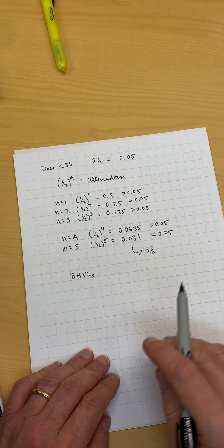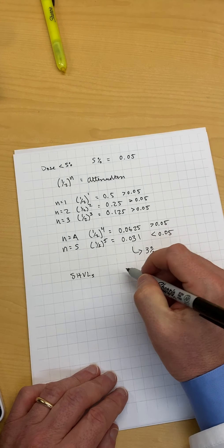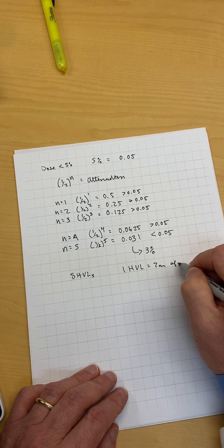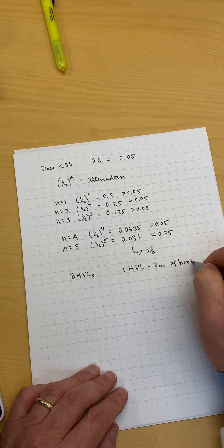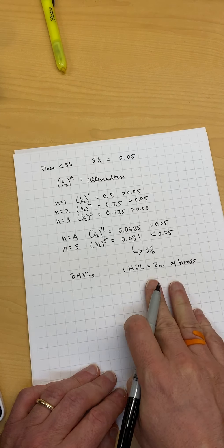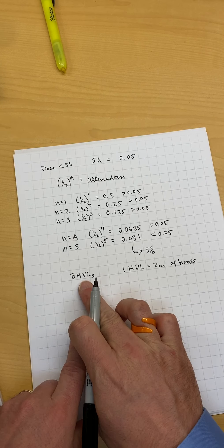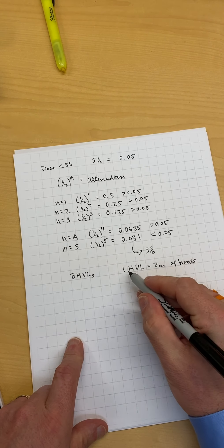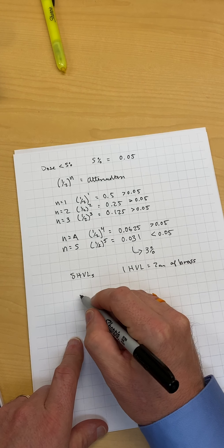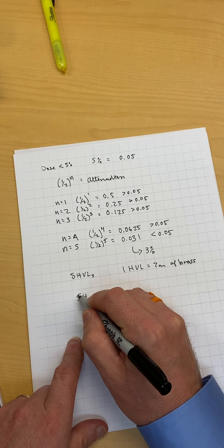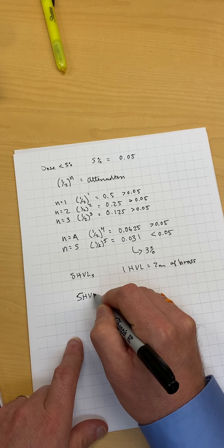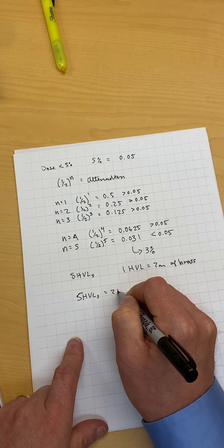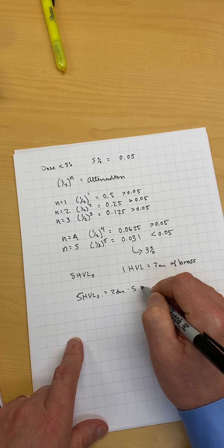Now the question is, we had one HVL equals two centimeters of brass for this beam. So we just have to multiply five HVLs by both sides. Five times one is five, five times two is ten. So five HVLs equals two centimeters times five, which is equal to ten centimeters.